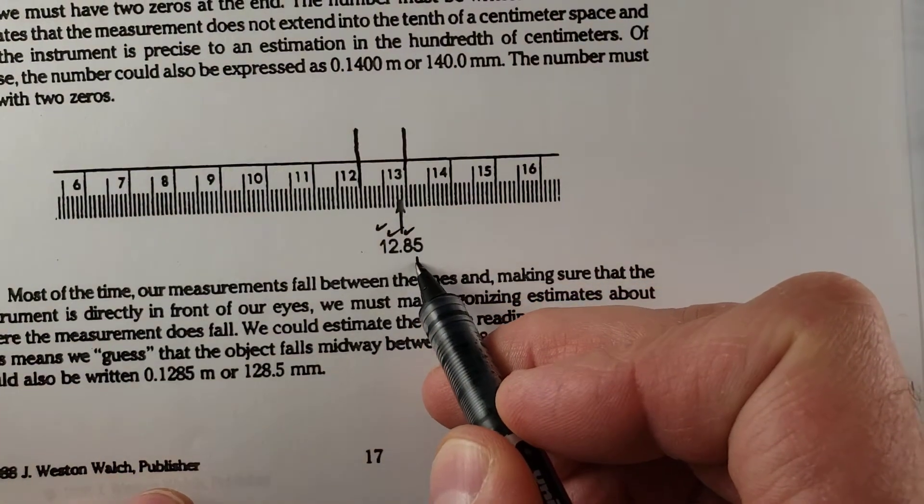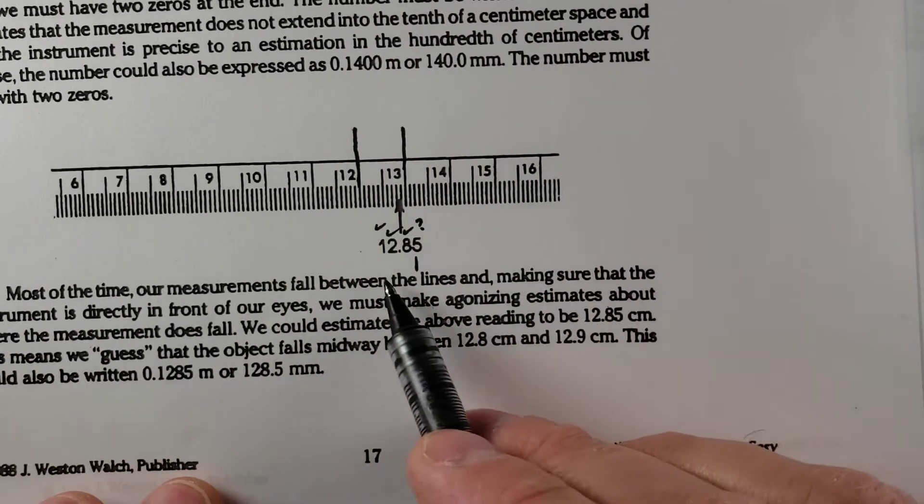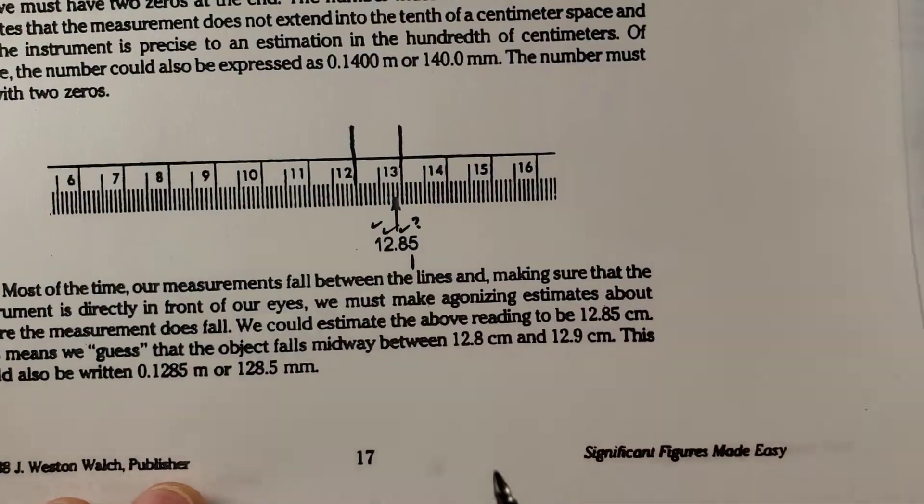So if it's in between, we assume that it is exactly halfway in between. So two decimal places, this one ends in a five.